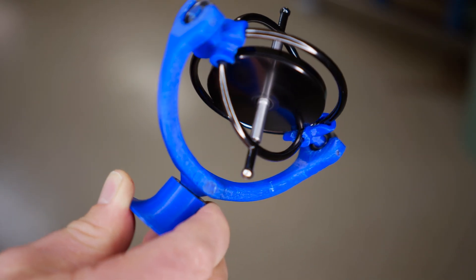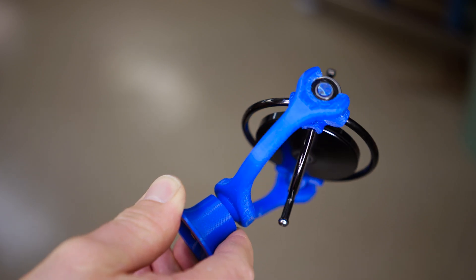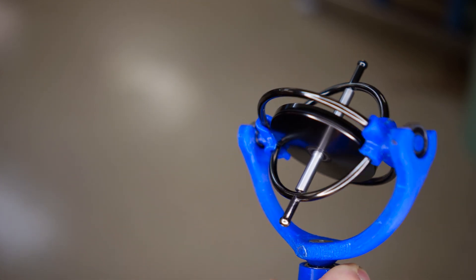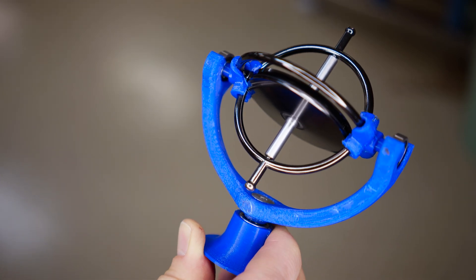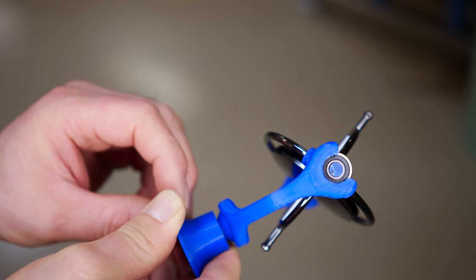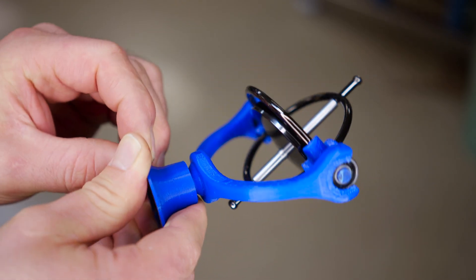Gyrocompasses rely on several principles. One of these include the principle of gyroscopic inertia. A spinning gyroscope tends to keep the direction of its axis stable.